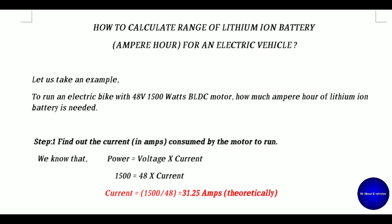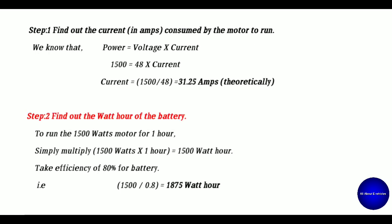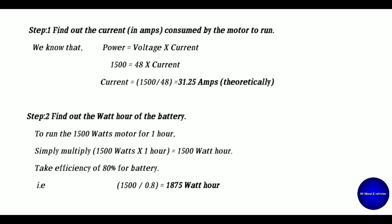Step two: you have to find out the watt-hours of the battery. This is the term commercially used to buy a battery — watt-hours or ampere-hours. Both terms can be used, but they are different. For buying the battery, we can use watt-hours or ampere-hours. To run the 1500-watt motor for one hour, simply multiply 1500 watts by one hour — you get 1500 watt-hours. We take the efficiency of the battery as 80 percent.